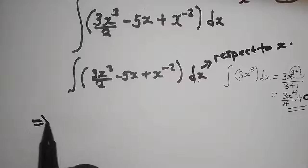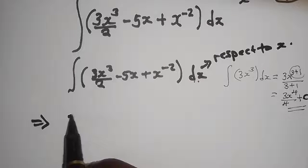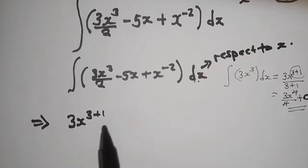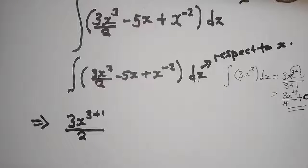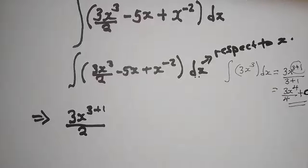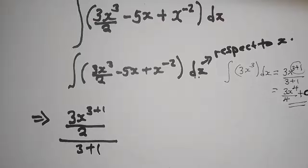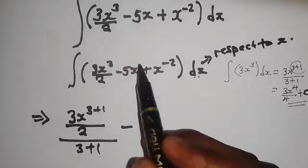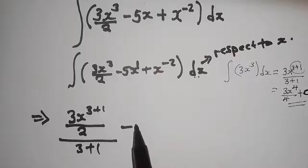Now applying the rule: the first term gives 3x to the power 3 plus 1, over 2, and we divide by 3 plus 1. For the second term, 5x has a power of 1, so we get 5x to the power 1 plus 1, over 1 plus 1.